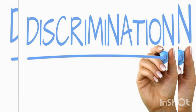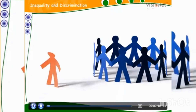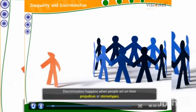Our next topic is discrimination. Discrimination happens when people act on their prejudice or stereotypes. Discrimination can take place because of several reasons. A group of people who may speak a certain language, follow a particular religion, or live in specific regions may be discriminated against as their customs and practices may be seen as inferior.